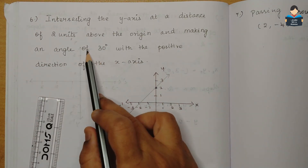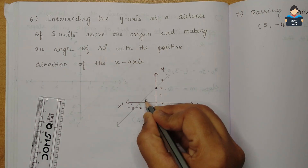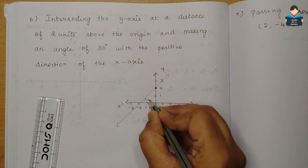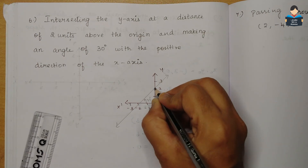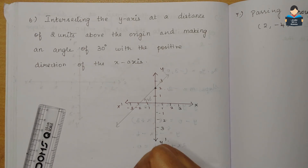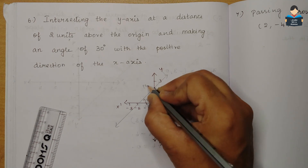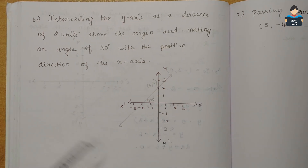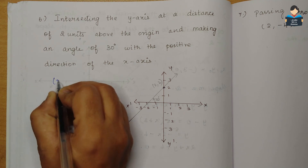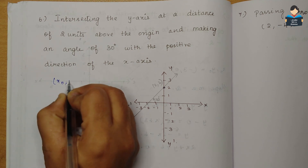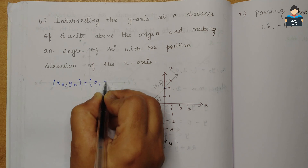The angle is 30 degrees. The point is on the y-axis, so the x-coordinate is 0. Therefore, x0, y0 is equal to 0, 2. The slope m equals tan 30 degrees equals 1 by root 3.